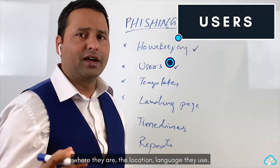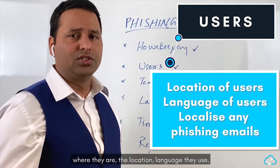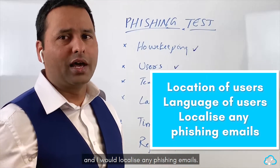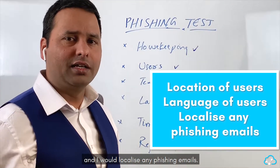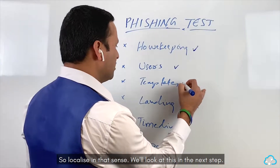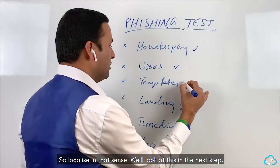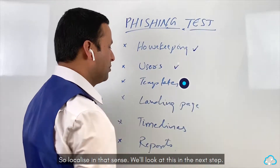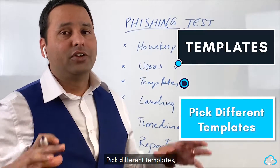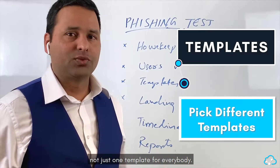Next thing: look at your users — where they are, their location, the language they use — and localize any phishing emails. We'll look at that in the next step.